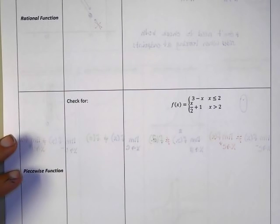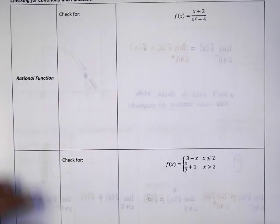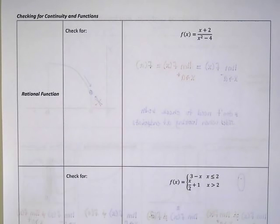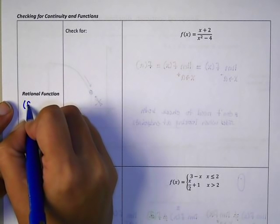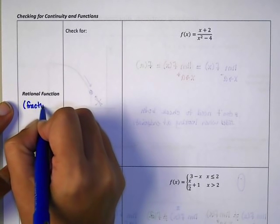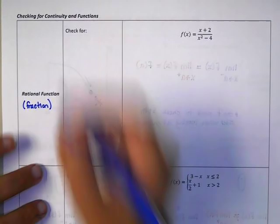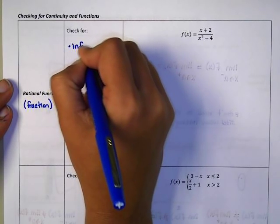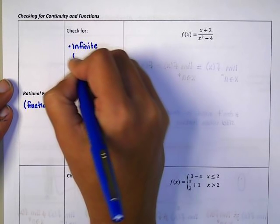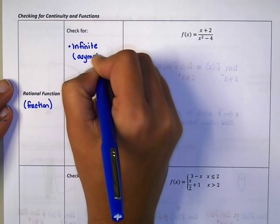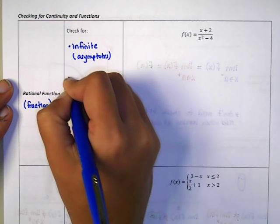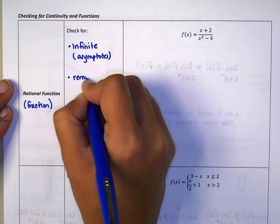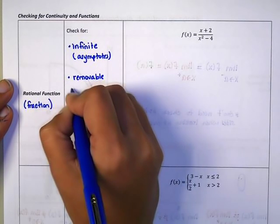So what kinds of problems could you see? We need to look at the equations we're given and the types of functions, and identify possible problem areas for discontinuity. If you have a rational function — meaning it looks like a fraction — then you're going to check for infinite discontinuities, which are vertical asymptotes, and removable discontinuities, which are holes.